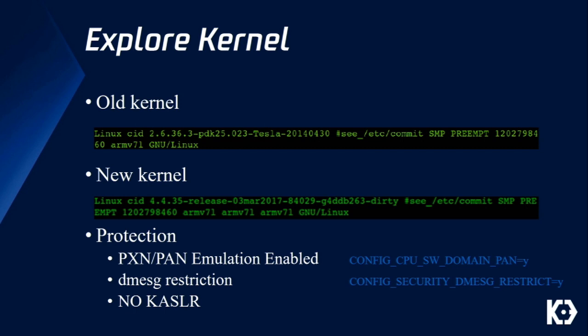However, the privilege is very low. Last year we utilized a well-known vulnerability to gain root privilege on CID. However, this time things became different because Tesla upgraded the kernel from 2.6 to 4.4. PXN is enabled, dmesg is restricted, so no crash log anymore. Good news is KASLR is not enabled on CID. Our workmate Nielsen decided to find our own privilege escalation vulnerability. Today he can't be here, so I'm going to help introduce this part of the research.